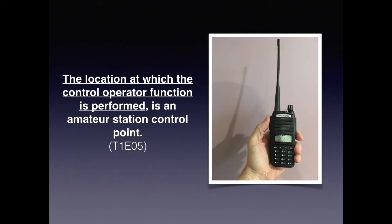The place where you key the transmitter or push the button is where the control function is being performed. As a control operator, you're managing the transmitter — whether it be your device, your transmitter, the repeater, or a space station. If you're pushing the button that makes it work, you're the control operator and the location you are in is where that function is being performed. The location at which the control operator function is performed is the amateur station control point.